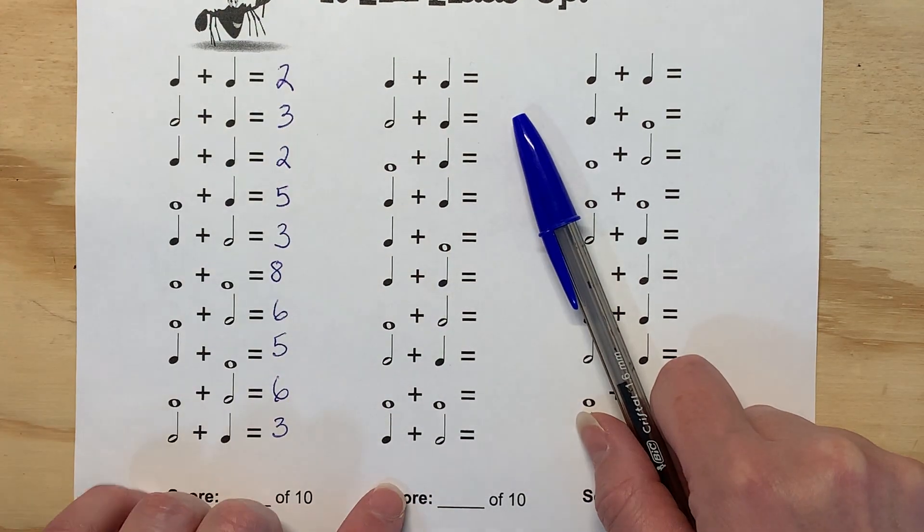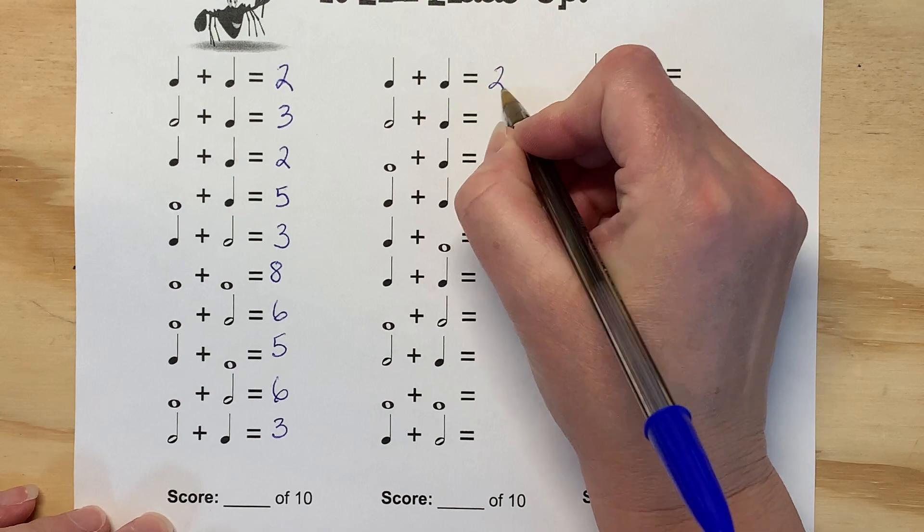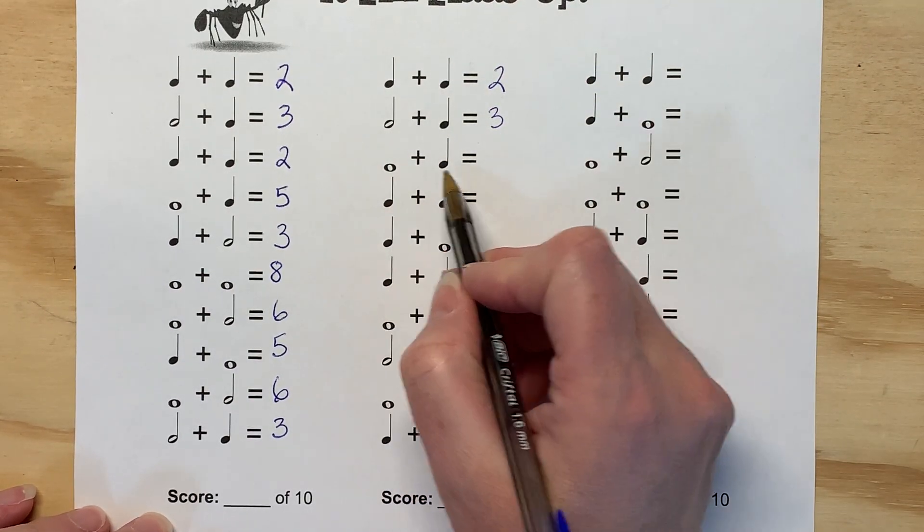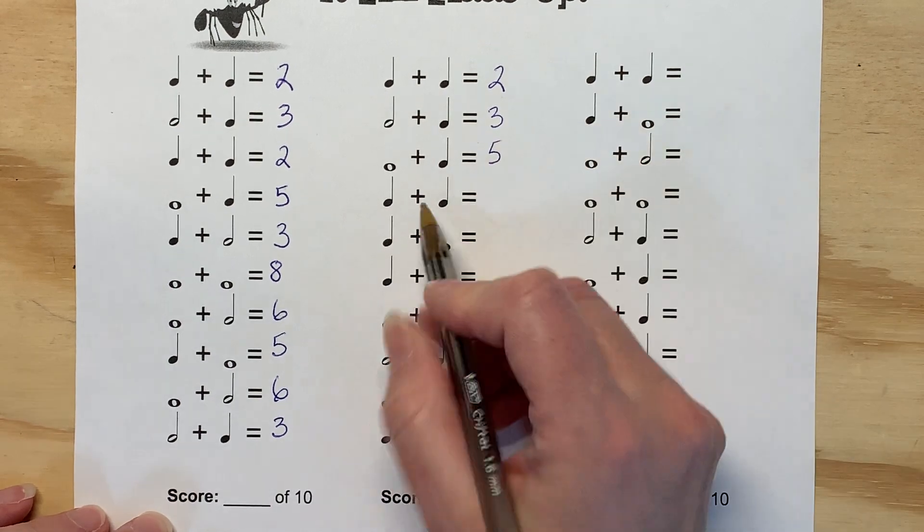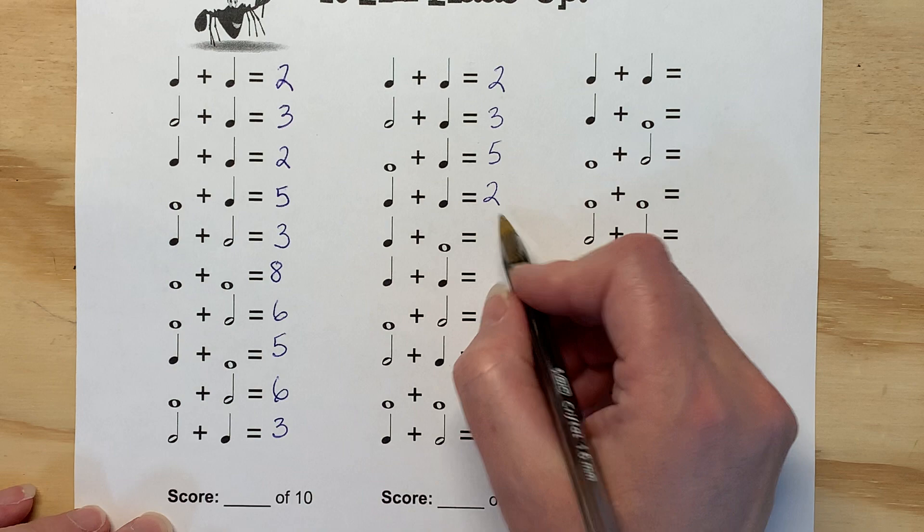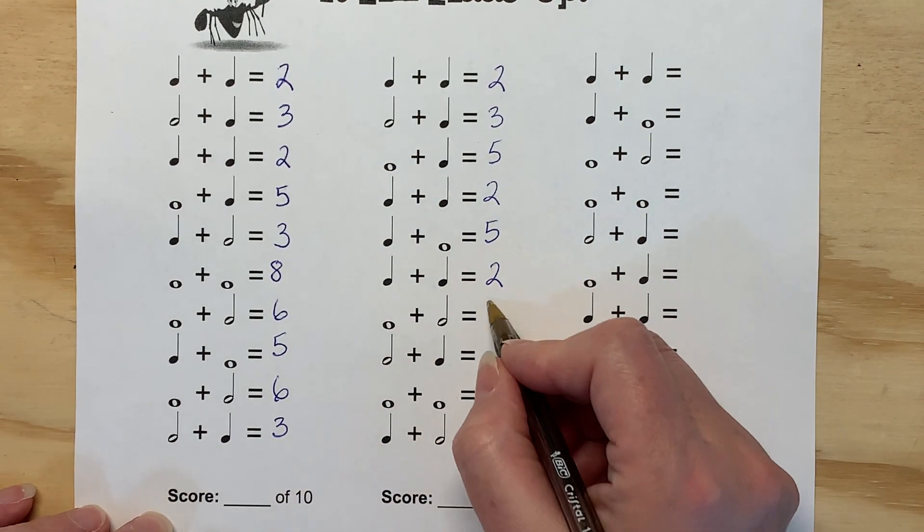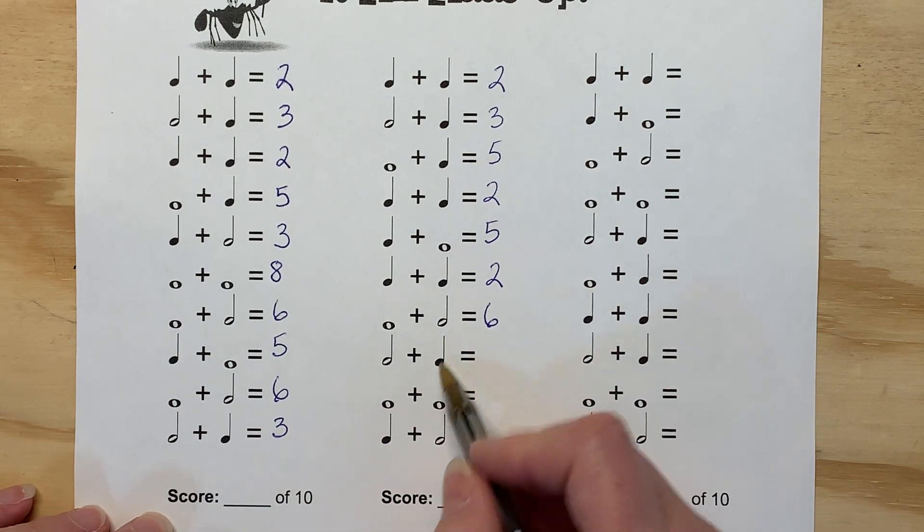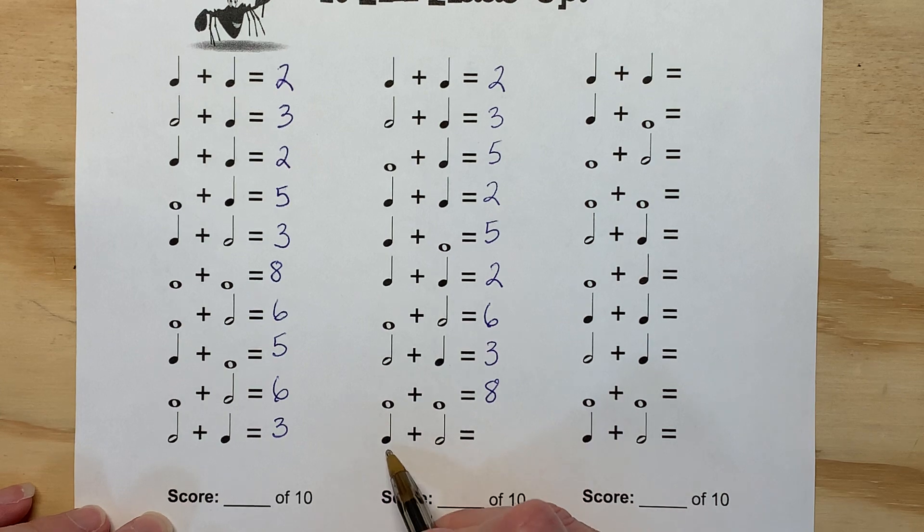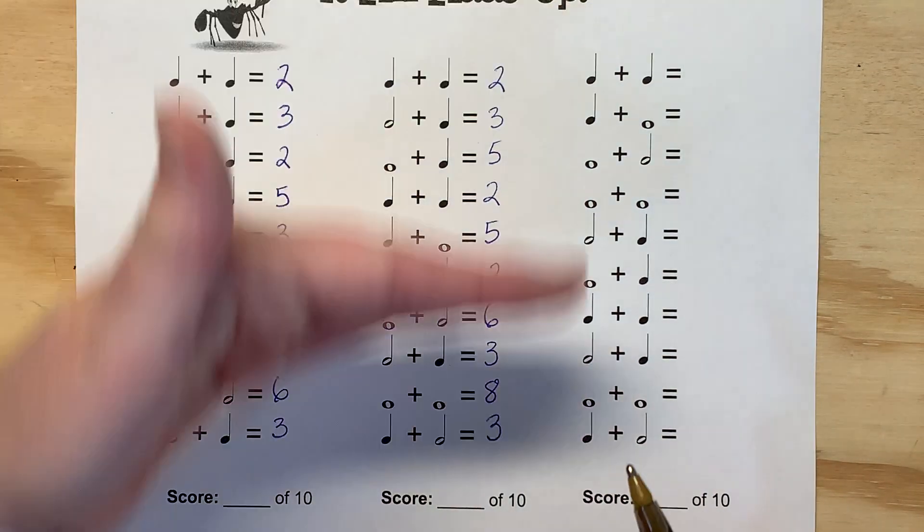Okay. You've finished row two. Here we go. One beat plus one beat equals two. Two plus one equals three. Four beats, one beat, five. One beat, one beat, two. One beat, four beat, five. One beat, one beat, two. Four beats, two beats, six. Two beats, one beat, three. Four beats, four beats, eight. One beat, two beat, three. So there are those. Those are correct.